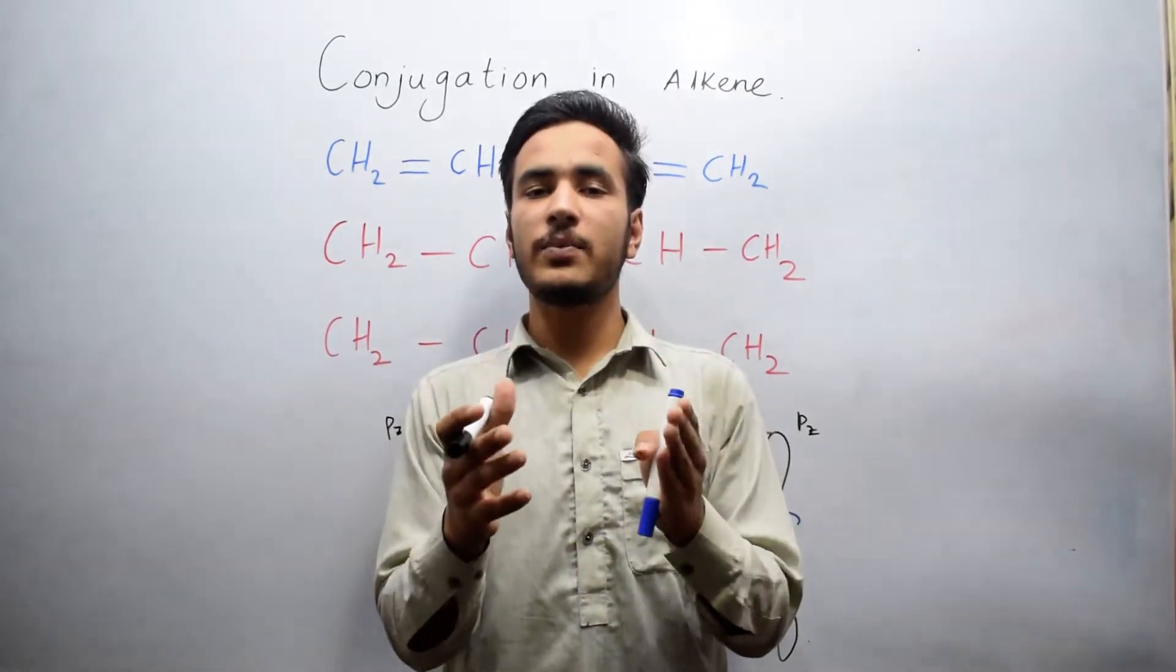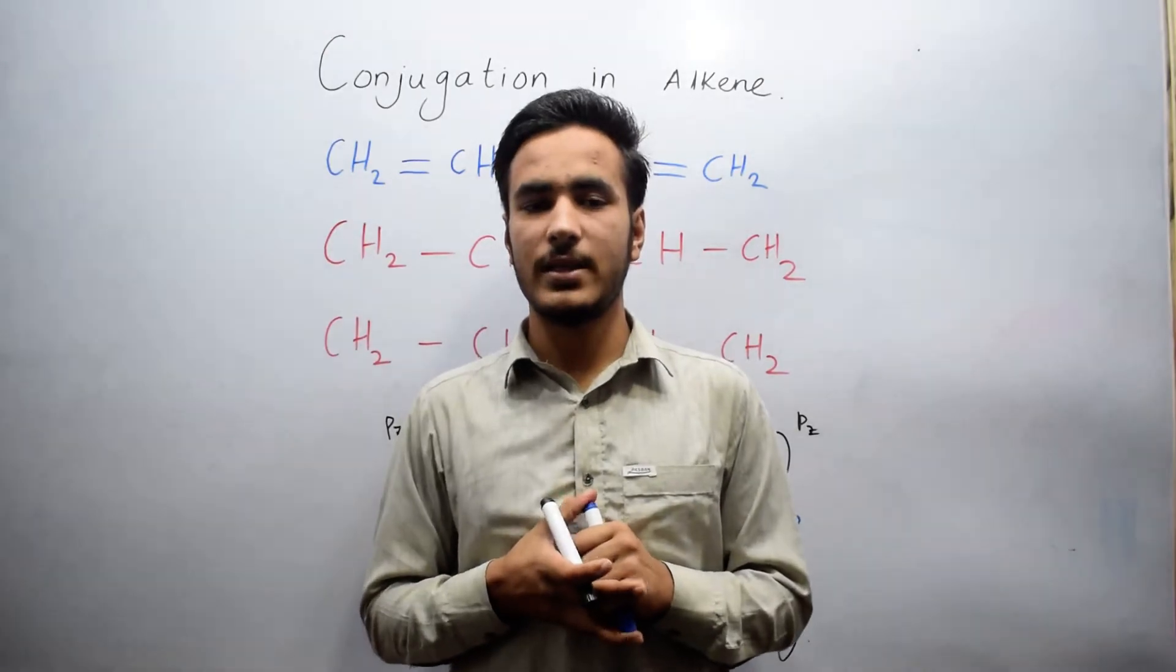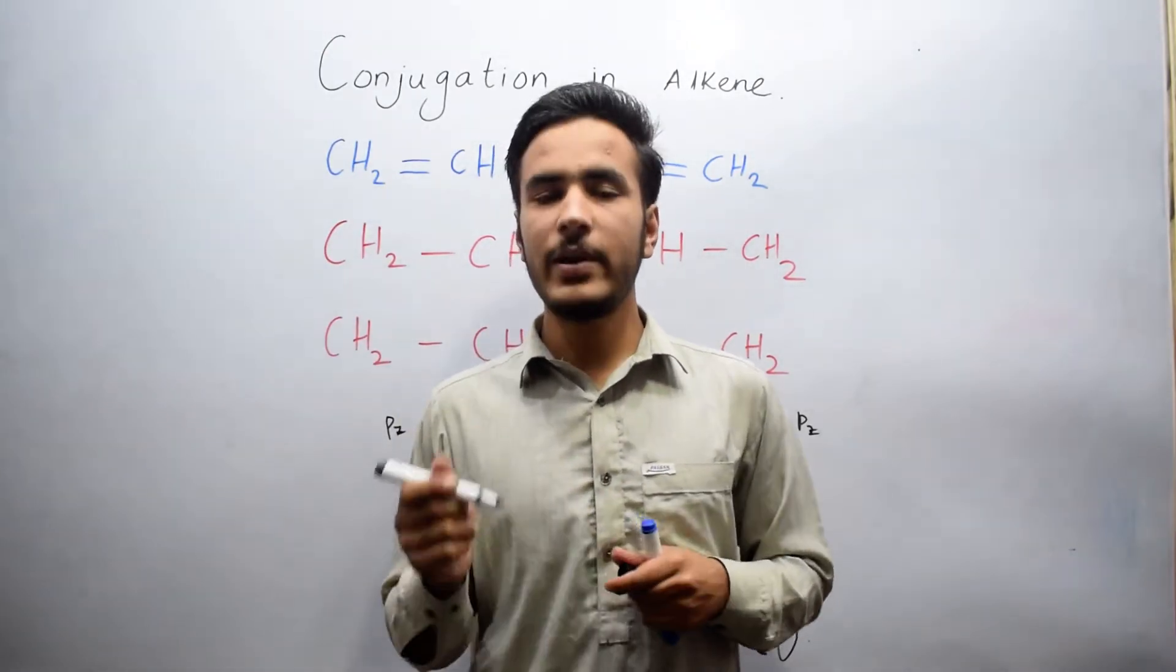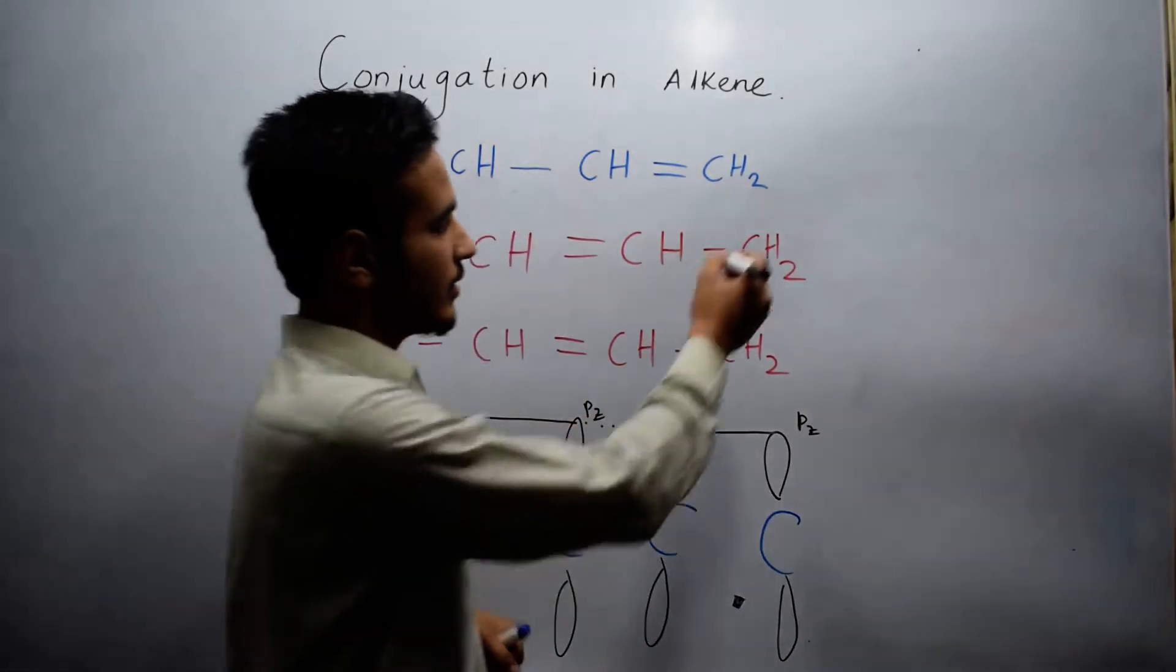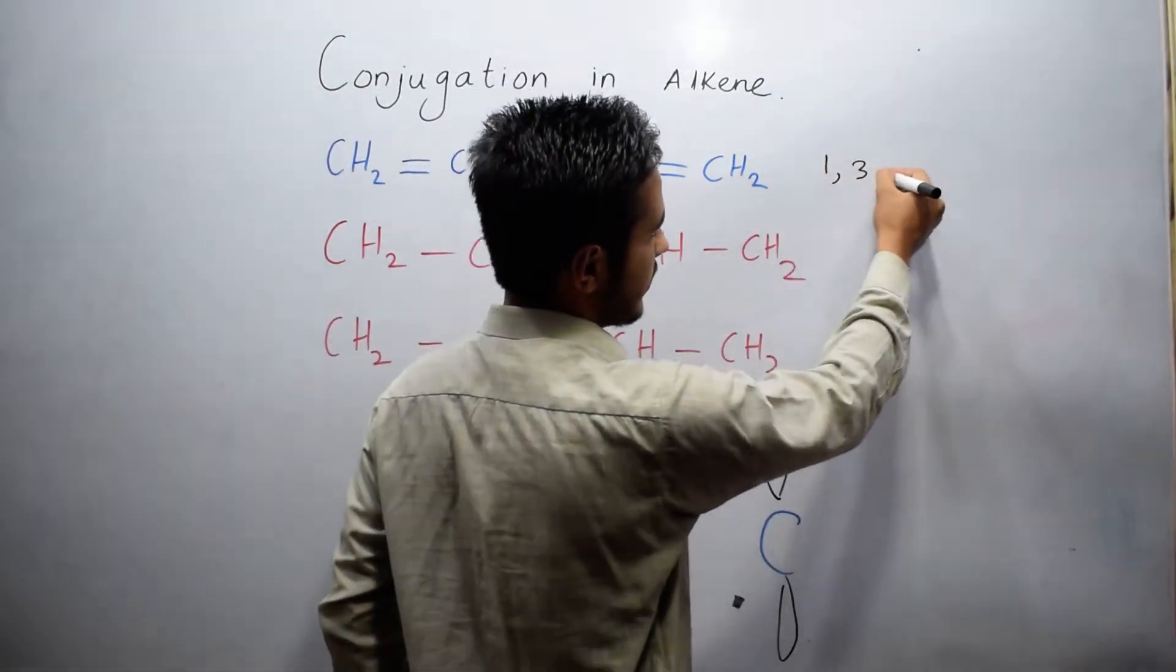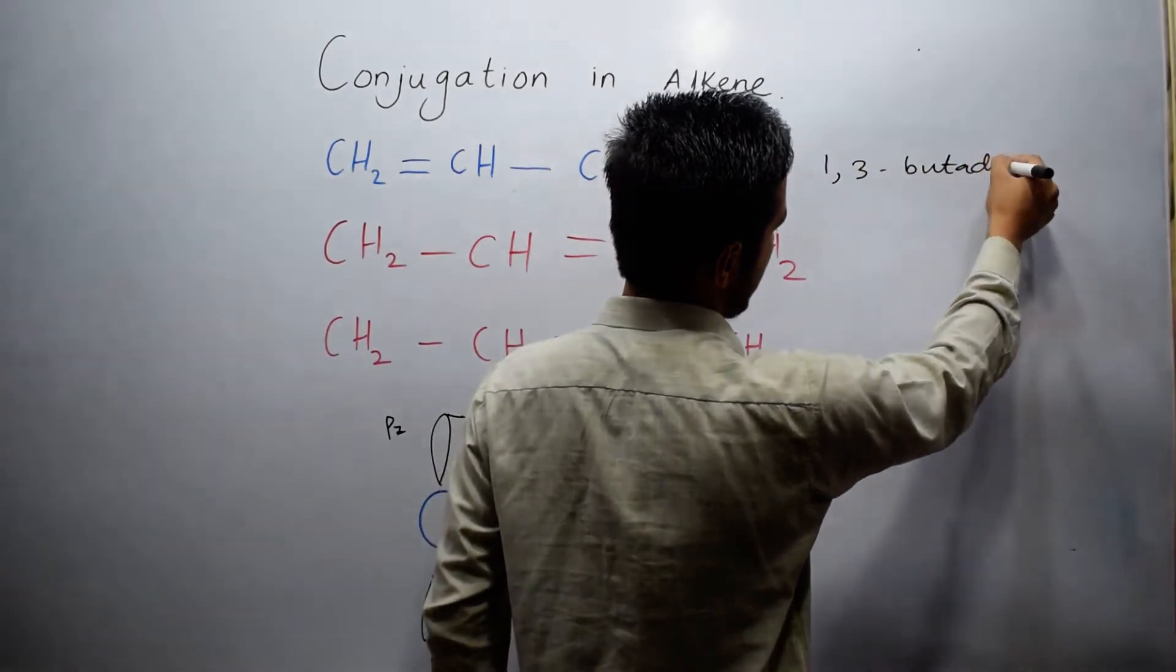This changing of the position of pi electrons is known as conjugation. We will take the example of 1,3-butadiene.